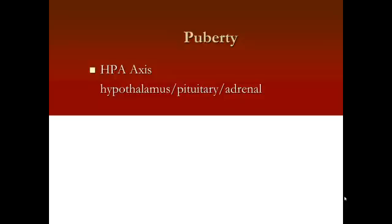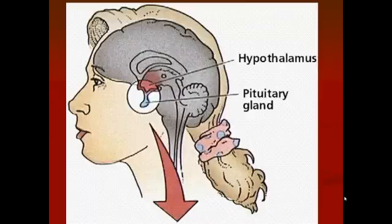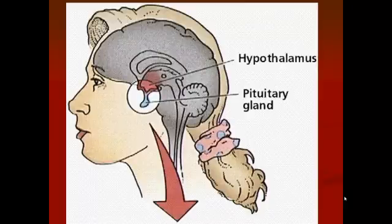The process of puberty begins with the hypothalamus, at least a year before you start to see any physical changes. The hypothalamus triggers the whole process and works by using hormones to act on the pituitary gland. The hypothalamus is a small part of our brain located in the center, and the pituitary gland is directly underneath it.